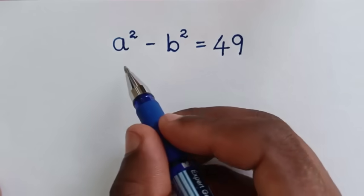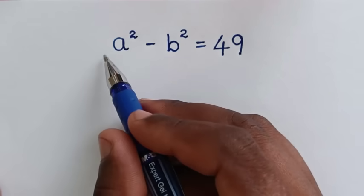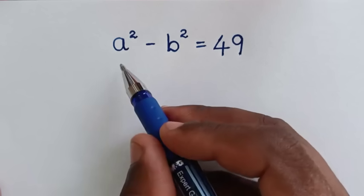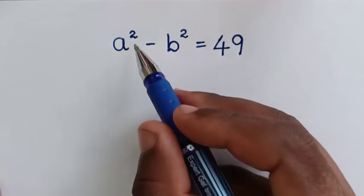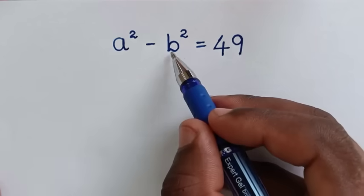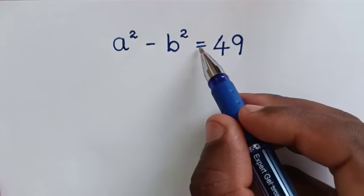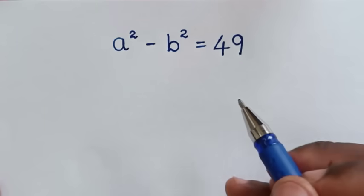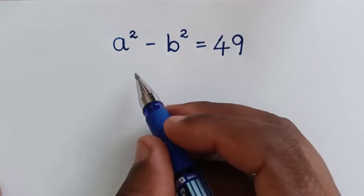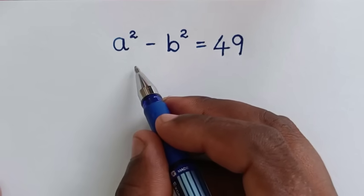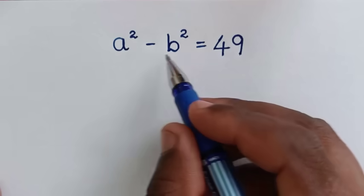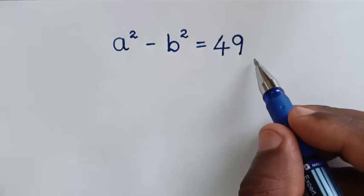Hello, you are welcome to solve this math problem: a squared minus b squared is equal to 49. We need to find the values of a and b from this equation.